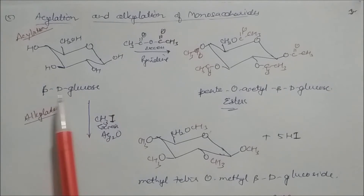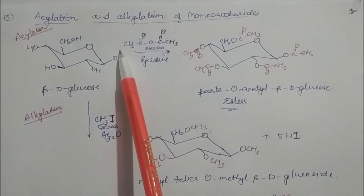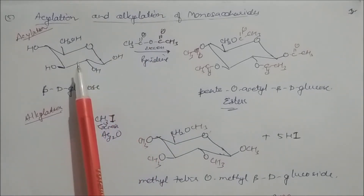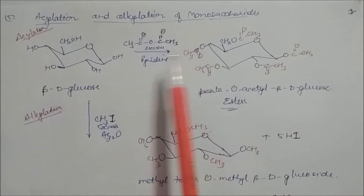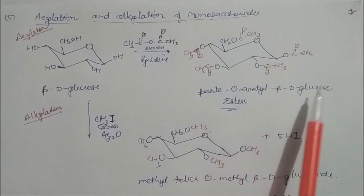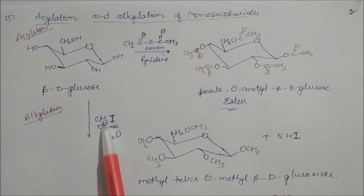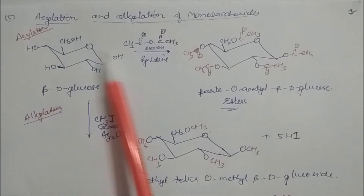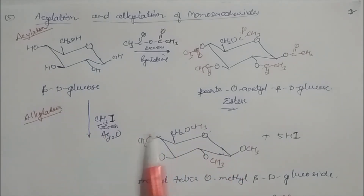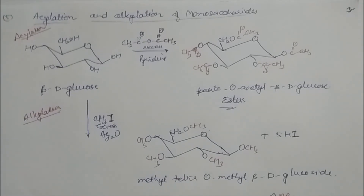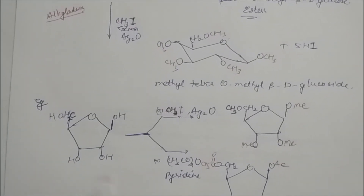For acylation of beta-D-glucose: using acetic anhydride in excess with pyridine solution, all OH groups are converted to acetyl groups (OC-CH3). The product is penta-O-acetyl beta-D-glucose. For alkylation, methyl iodide in excess with silver oxide (Ag2O) is used. The hydrogen from each OH is removed and nucleophilic substitution places a methyl group (OCH3) — forming an ether linkage. The product is methyl tetra-O-methyl beta-D-glucoside.